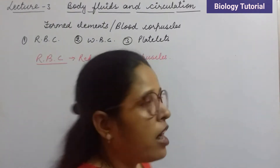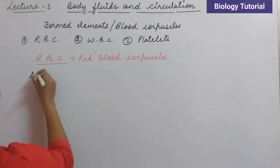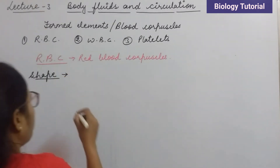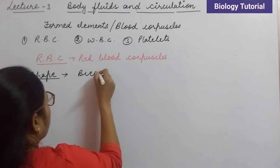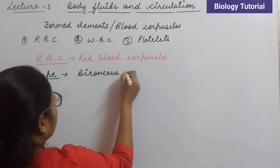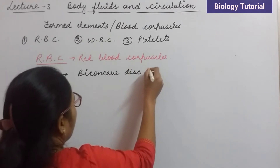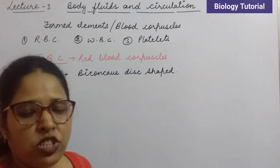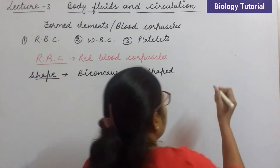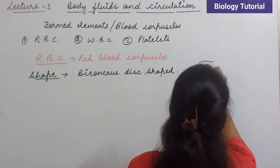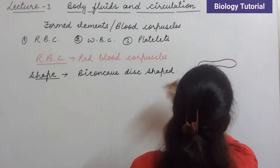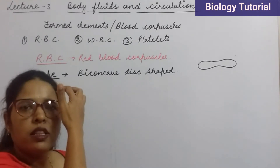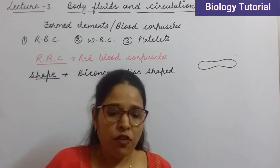Now, what is the shape of RBCs? We will discuss about some important facts about RBCs. The shape of RBC is biconcave disc shaped. The RBCs are biconcave disc shaped structures — the end parts bulge out slightly and at the center it is narrower. This is the type of disc-like structure we see in RBCs.